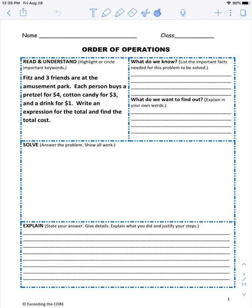So, order of operations: read and understand, highlight or circle important keywords. Then we're going to look at what do we know, what do we want to find out, we're going to solve, and then we're going to explain our answer.